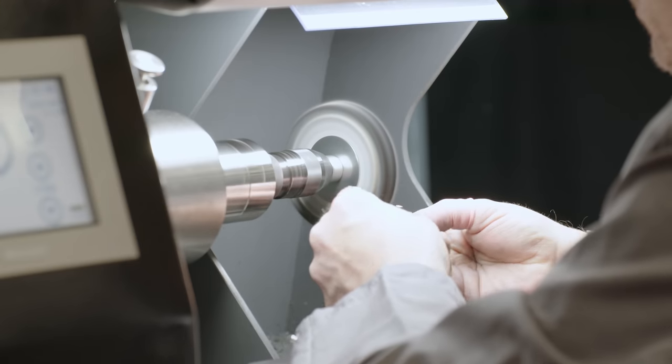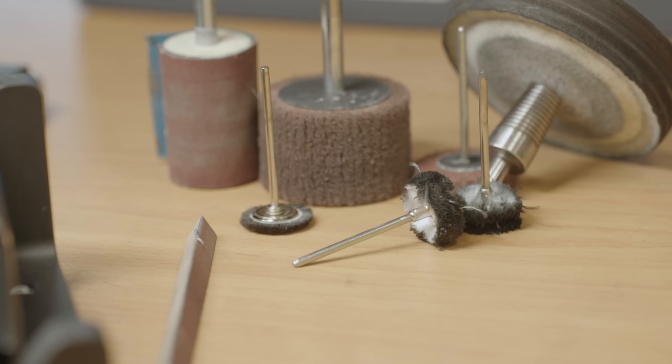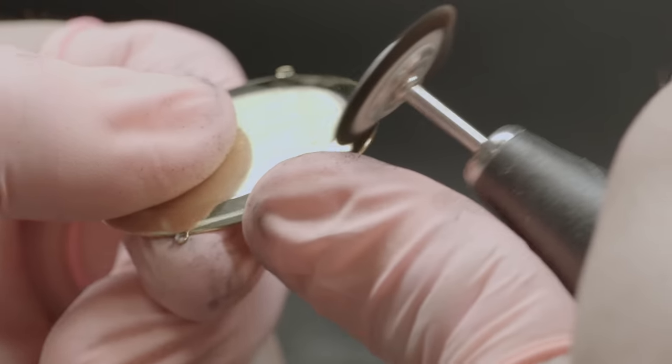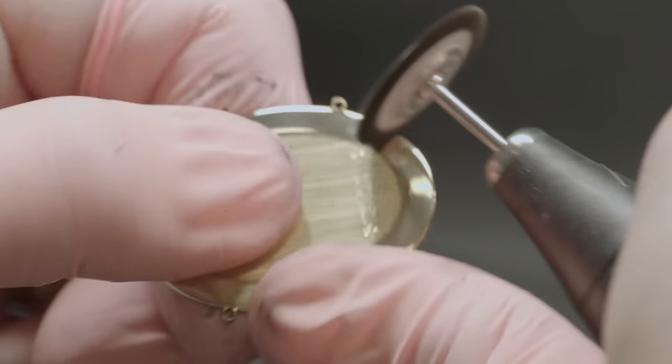Refinishing a case is a delicate matter, striking a balance between bringing back the watch's luster and retaining its character. Hand tools are carefully used to selectively restore each piece, with no two watches receiving exactly the same treatment.